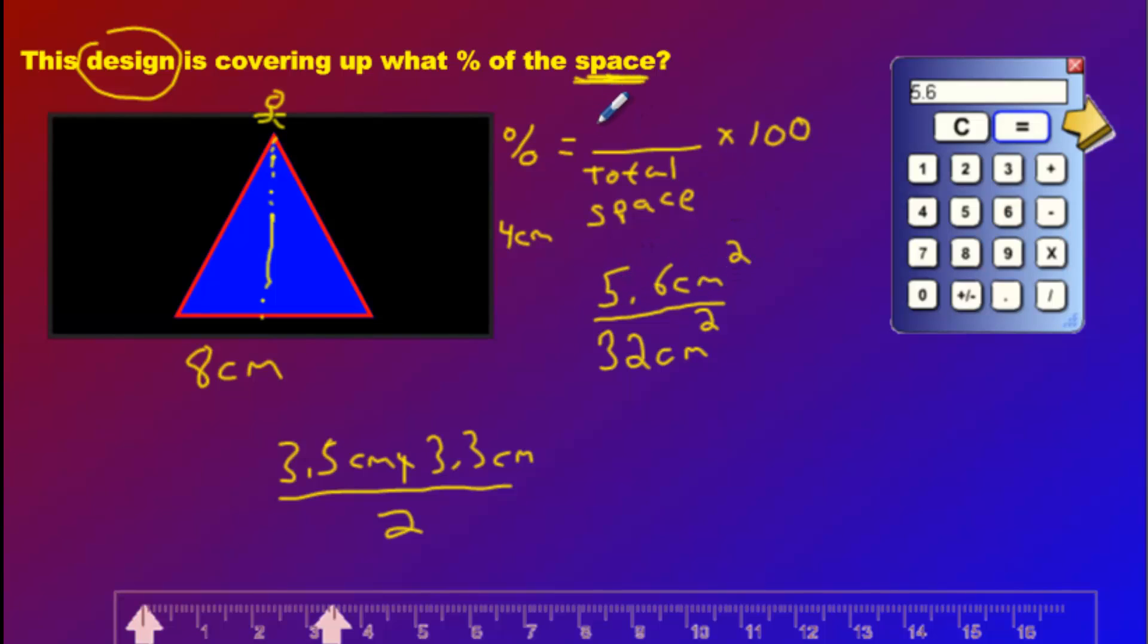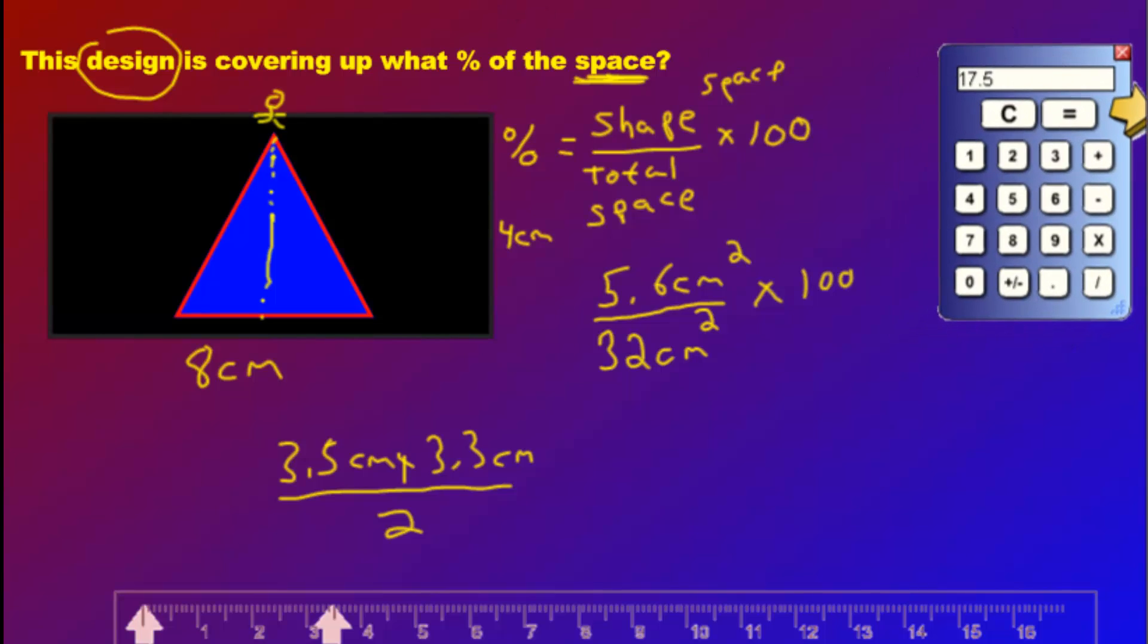So let's finish this off here. We said space of shape, so we'll just write shape space, divided by total space. Now we have to take these, divide them, and times by 100. So we'll go 5.6 divided by, divided by 32, don't multiply, make sure you divide by 32, times by 100, what do we get? We get 17.5%.